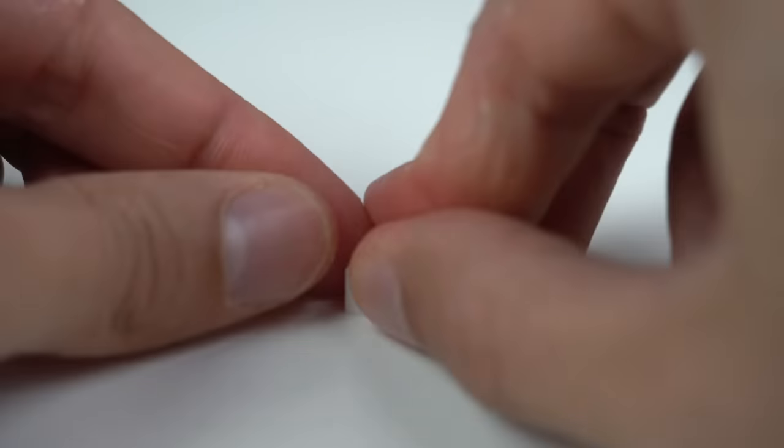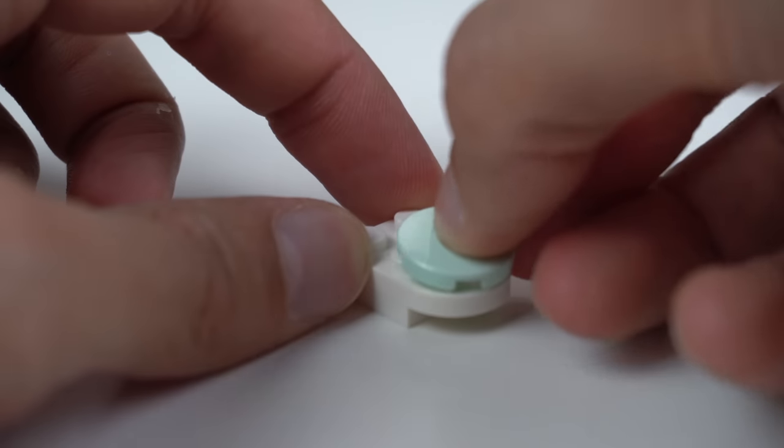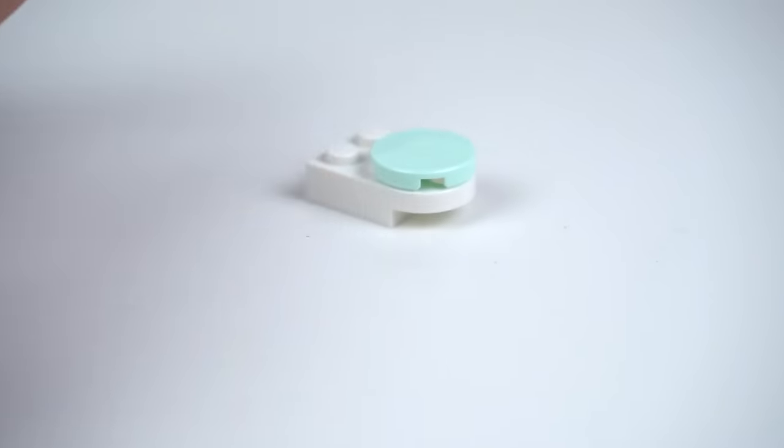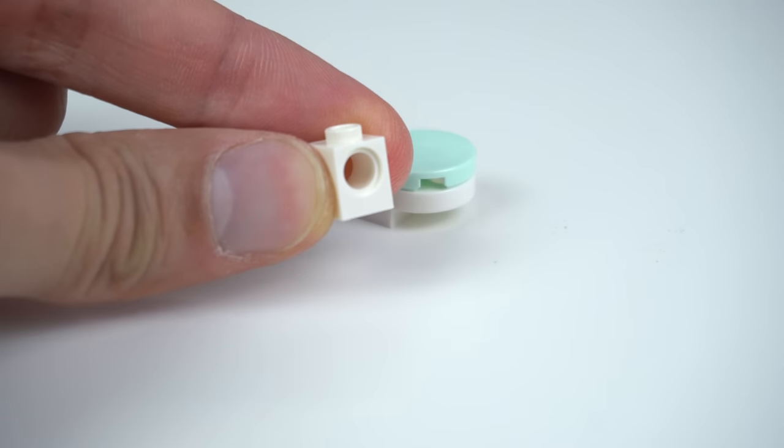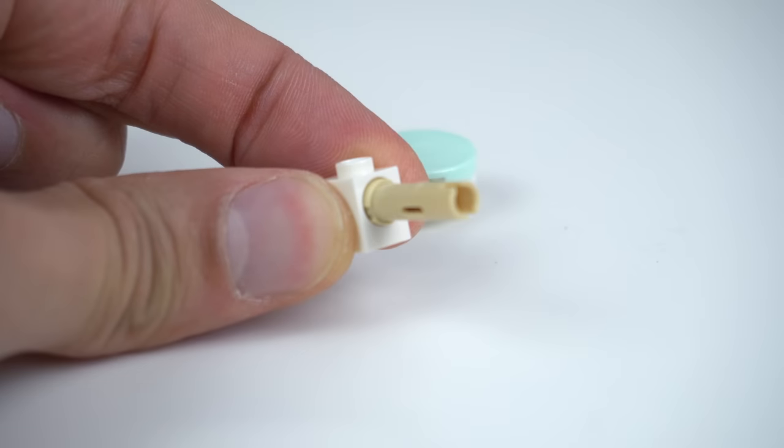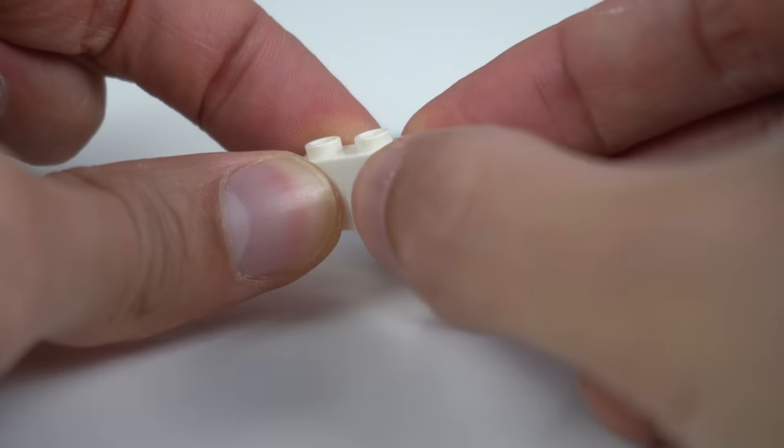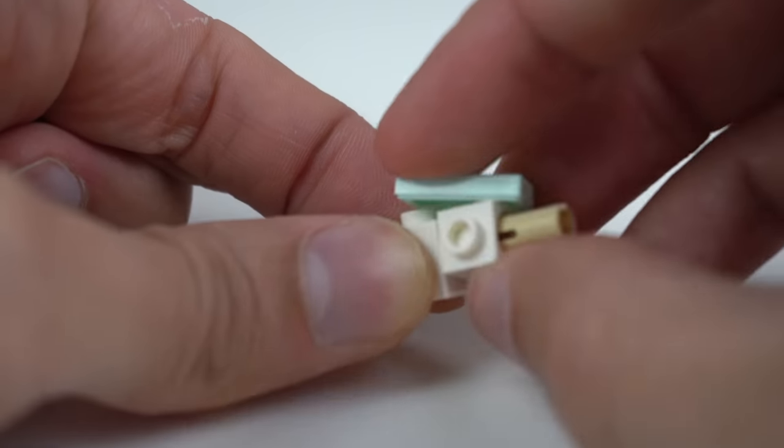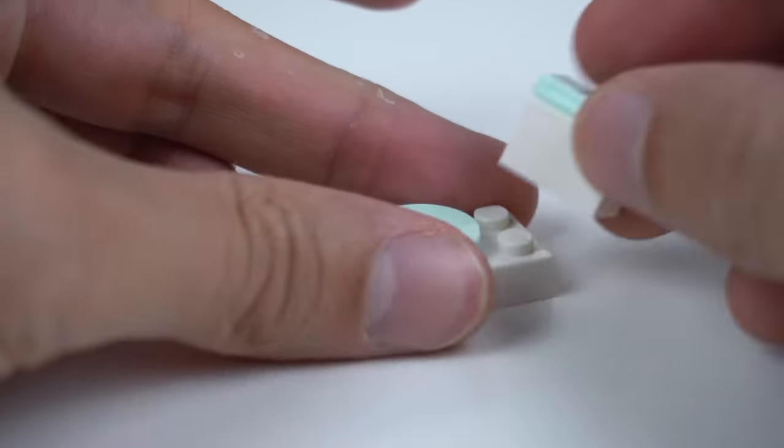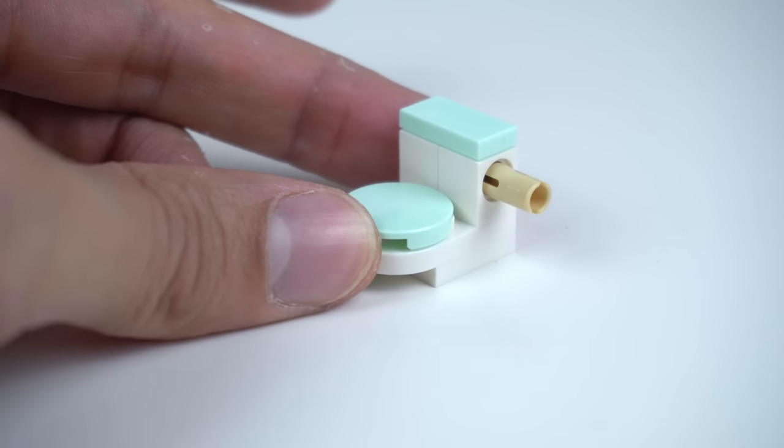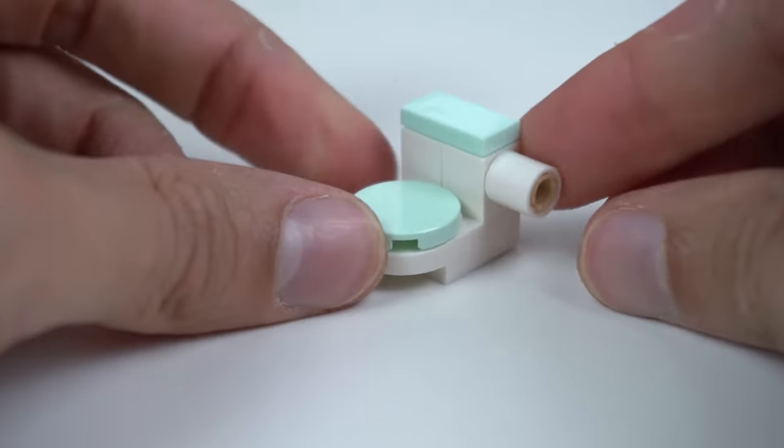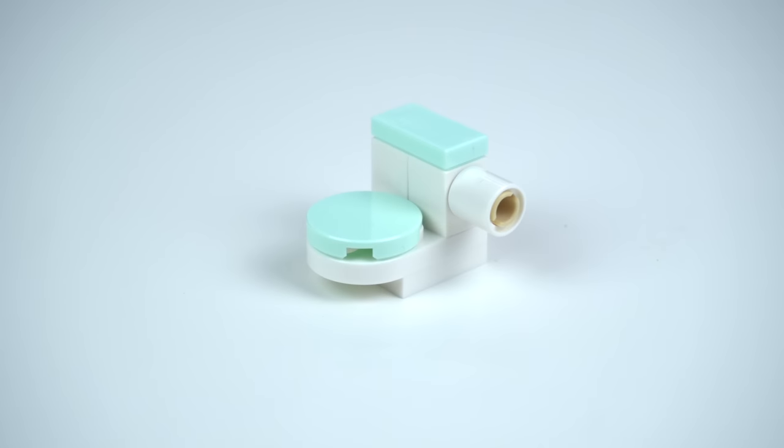Toilets. LEGO toilets. Yes, we always need them and this one is particularly genius. First off we start with this build here with the Technic bricks that apparently doesn't make too much sense in a toilet build, but then you can see that the pin is over there and then you place one of the 1x1 Technic beams and voila, the toilet paper.